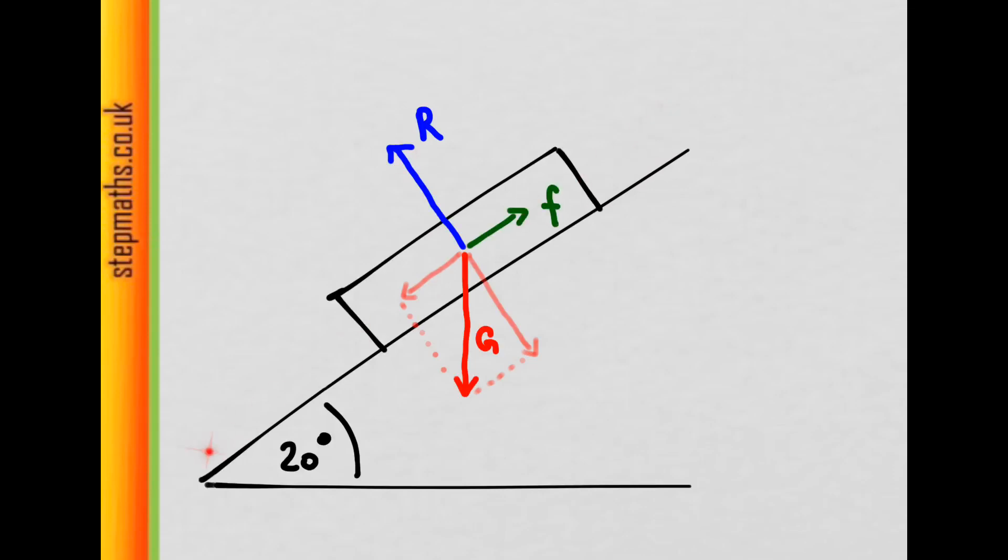And in the direction along the line, we also must have a force. In this case, that's friction. And again, that's the same as this component of the gravitational force.